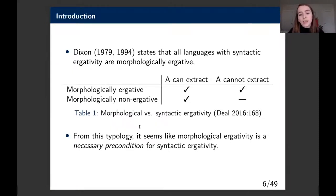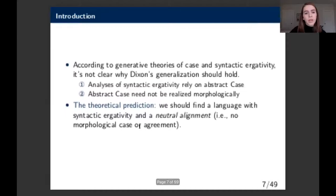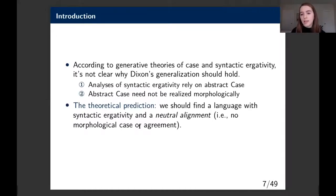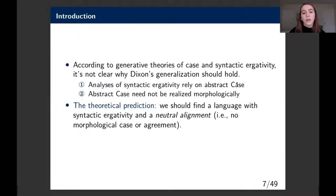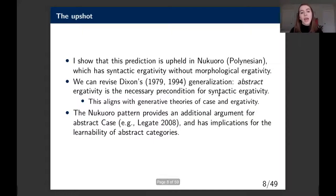From this typology it seems like morphological ergativity is a necessary precondition for syntactic ergativity, but if we look at generative theories of case and syntactic ergativity it's not clear why this typology should hold. This is for two reasons: analyses of syntactic ergativity typically rely on abstract case, and abstract case need not be realized morphologically. Together, these predict we should find a language with syntactic ergativity and neutral alignment in morphological case or agreement.